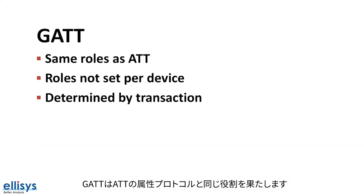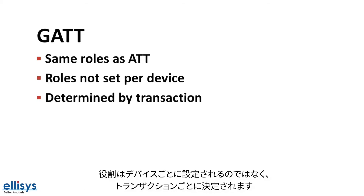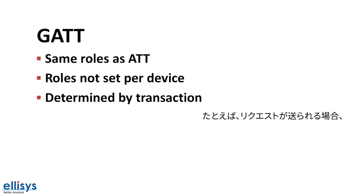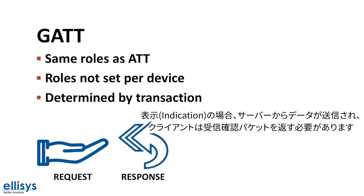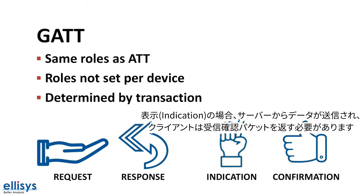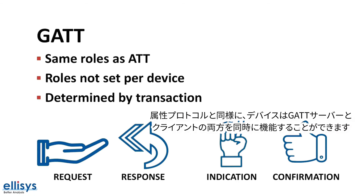GATT takes on the same roles as the Attribute Protocol. The roles are not set per device but rather determined per transaction. For example, when a request is sent, it is sent by the client, and the server responds with a response. In the case of an indication, the indication is sent by the server, which requires that the client returns a confirmation packet. Similar to the Attribute Protocol, a device can act as both a GATT server and a client at the same time.